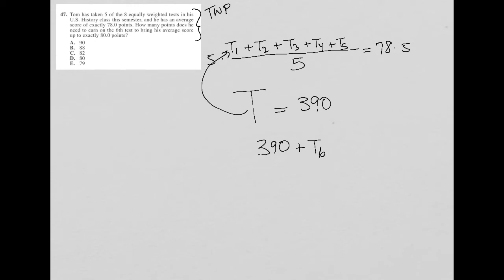And of course, you could use X here. I'm just using, I don't know why I'm using T. But you can use X or A, whatever variable you want to represent the test. But I also know that after taking the sixth test to find an average, we would be dividing by six now instead of five. And we know that that average, we want to be 80.